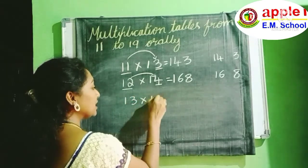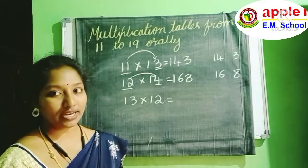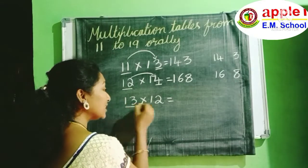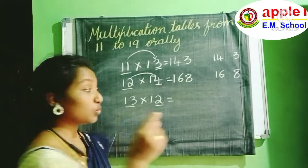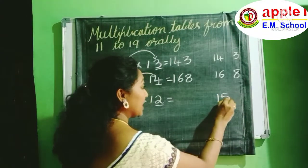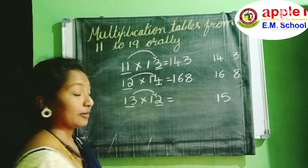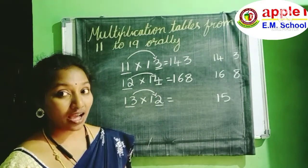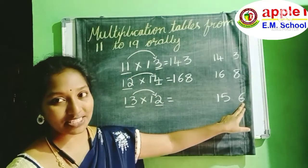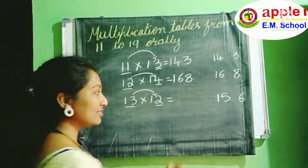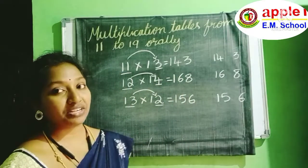I will give one more example: 13 into 12. For 13, add 2. 13 plus 2 is 15. Now multiply the ones place digits — three twos are six. This is a single digit number, so what is the answer? Answer is 156.